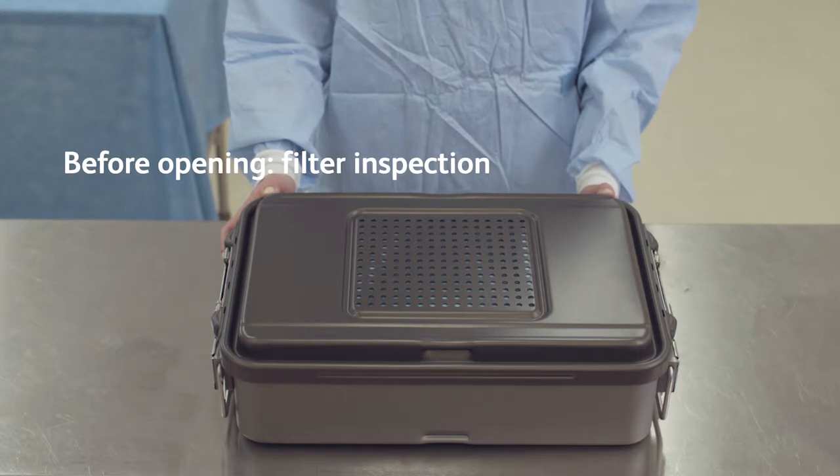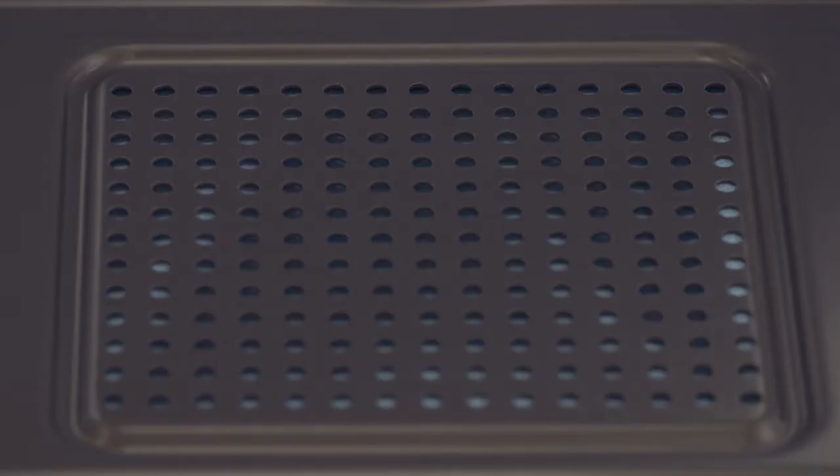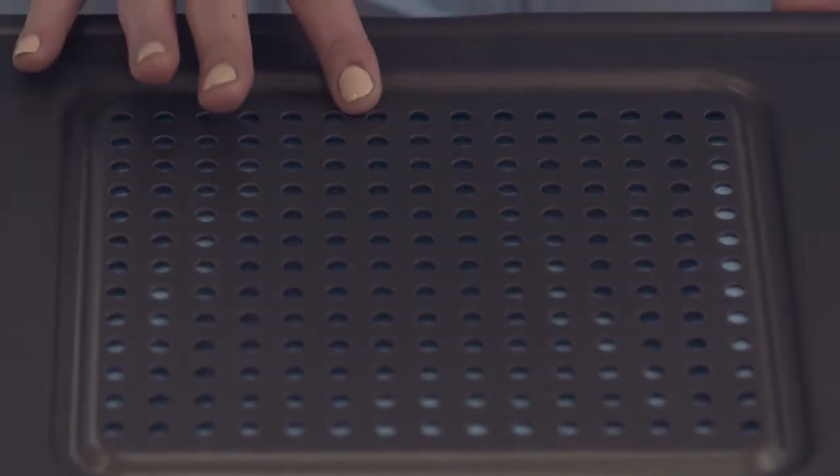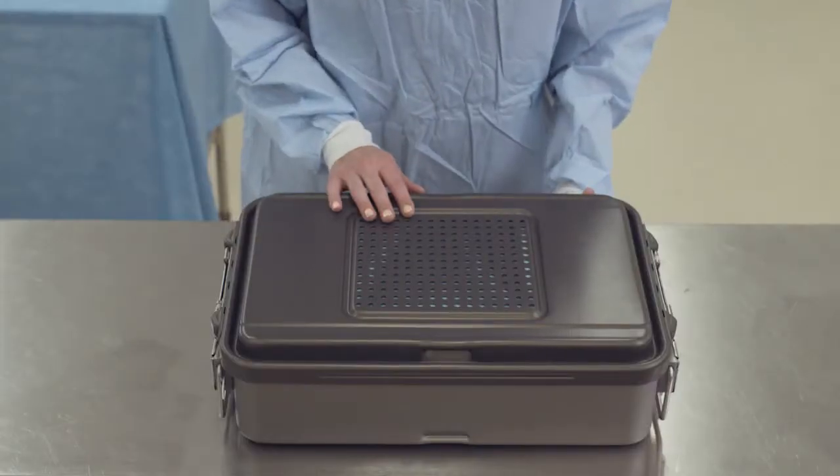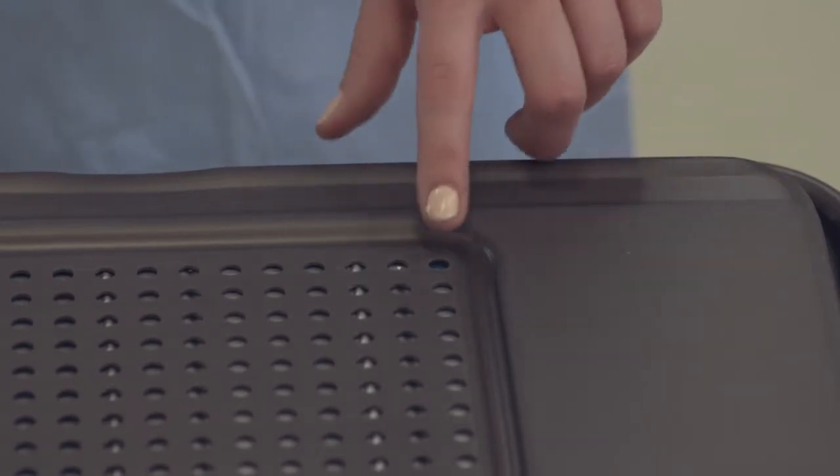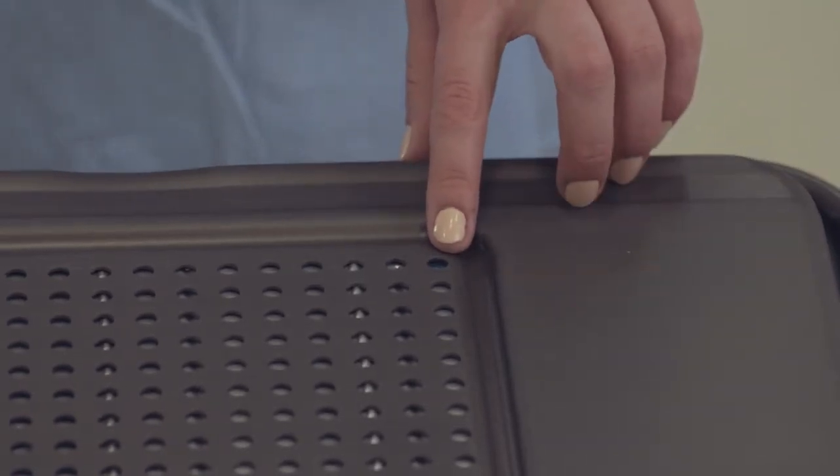Inspect to ensure the filter is in place. The filter color will show through the perforations on the lid of the container and container bottom. If the optional protective plate was used, the filter color will show through a single corner of the perforation area.